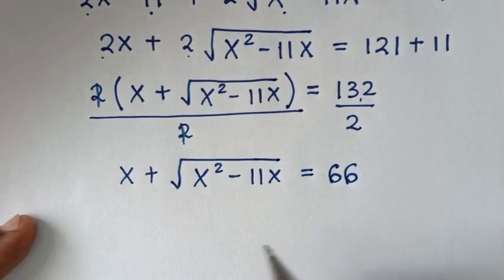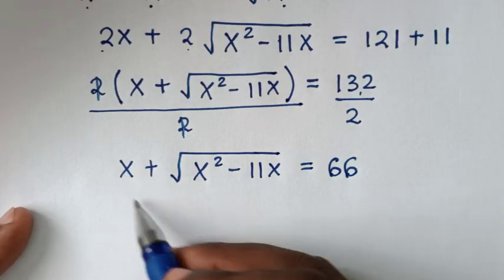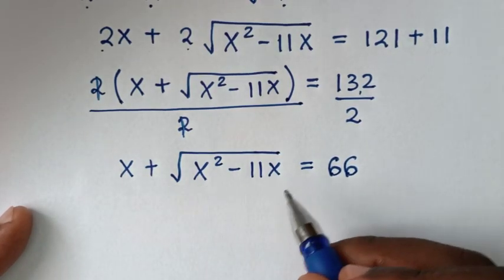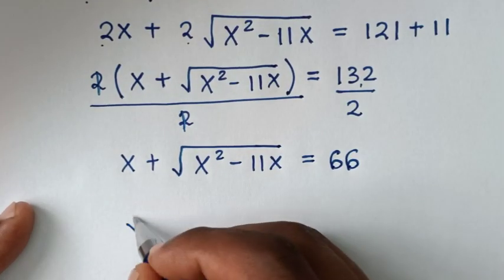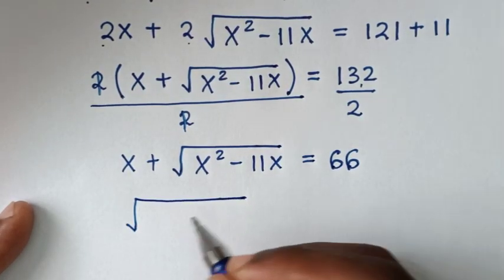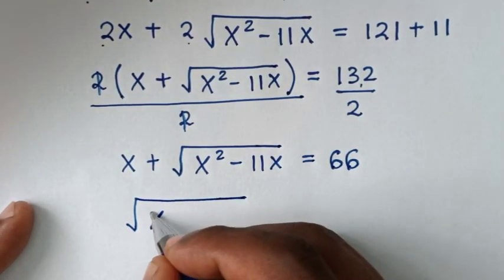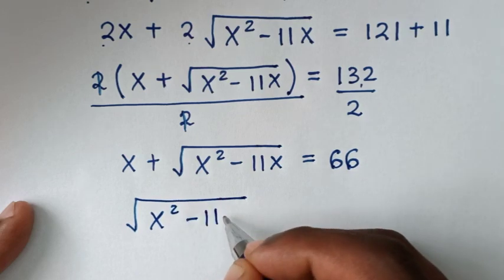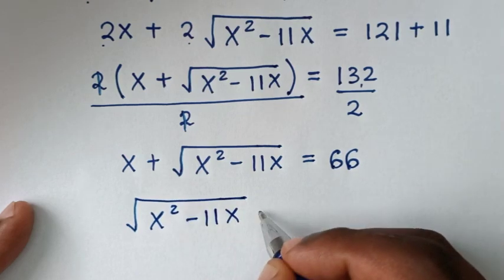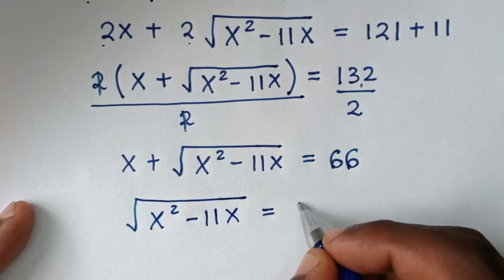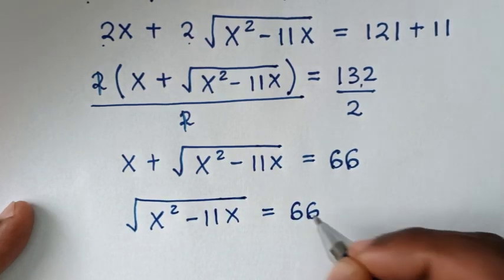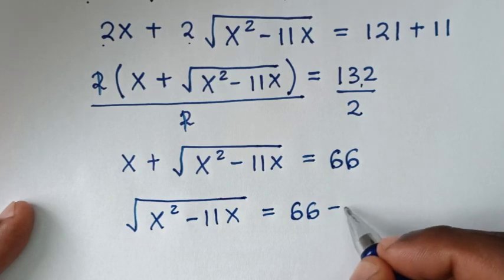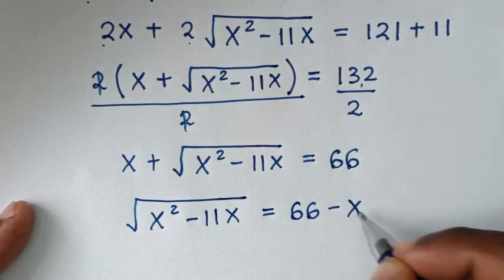In the next step, we move x to the right side. So it becomes: the square root of x² minus 11x is equal to 66 minus x.